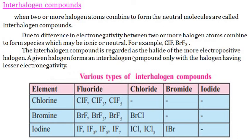A halogen forms interhalogen compounds only with a halogen having lesser electronegativity. Fluorine is the most electronegative and forms compounds with chlorine, giving ClF, ClF3, ClF5, etc. Depending on their composition, interhalogen compounds are classified into four types: XX' (diatomic), XX'3 (tetraatomic), XX'5, and XX'7. IF7 is the only known example of the XX'7 type.